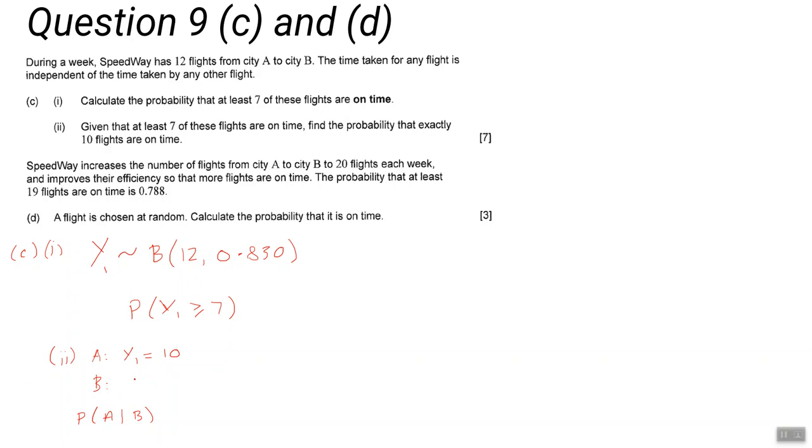B is the thing we know, that Y1 is greater than or equal to seven. So our probability of A given B is the probability of A and B happening, that means they both happen, over the probability that B happens. Now in this particular question, A is the probability that exactly ten flights are on time, and B is the probability that at least seven are. Well, A can't happen without B.